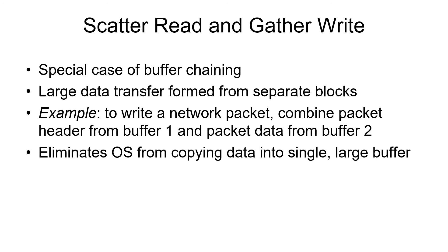Scatter-gather is particularly useful if you have operating system information and user data that both need to be sent to the I/O device. For instance, with a network packet, the network header may be created by the operating system, whereas the data to be sent comes from the user address space. You can do I/O buffer chaining so that you write some of it from an I/O buffer in the operating system specifying the header, and then the rest from the user data space where the data is.